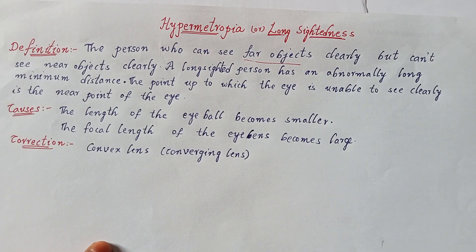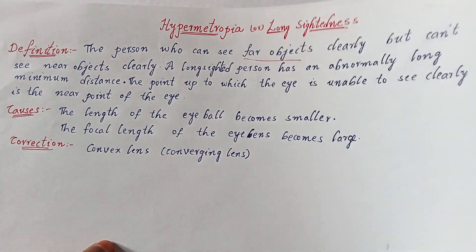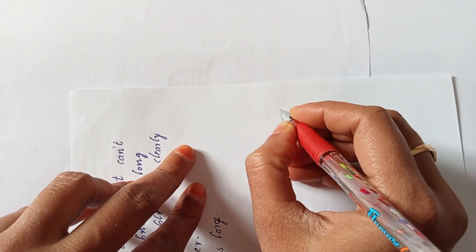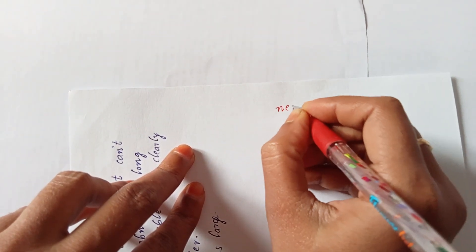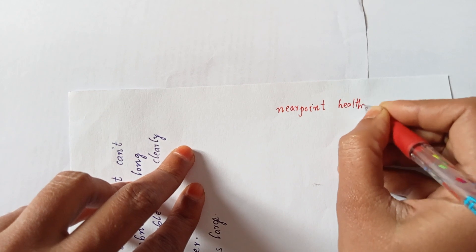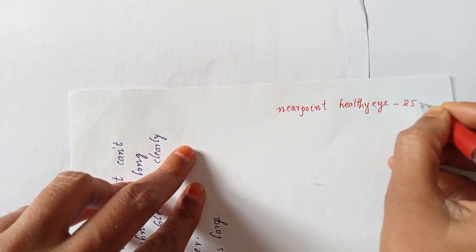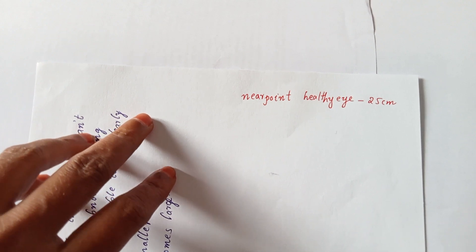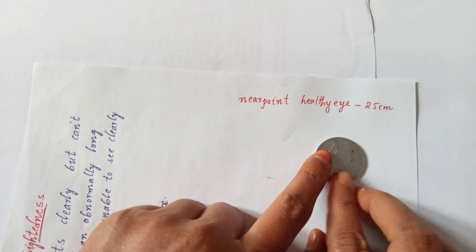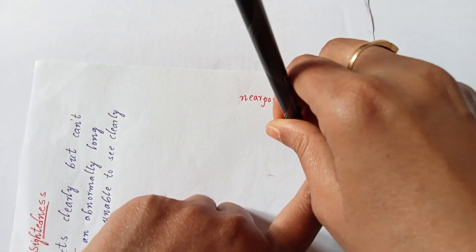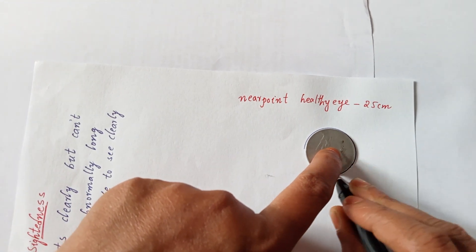We will see hypermetropia ray diagrams now — for the defect and for correcting hypermetropia, how to draw the ray diagrams. First, let us consider the healthy eye. The far point doesn't have any problem; only the near point matters. For a healthy eye the near point is 25 cm. I am drawing the eye using a small circle — I am using a coin as I did in the previous video.